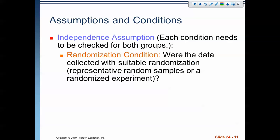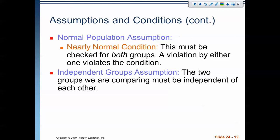The randomization condition: were the data collected with a suitable randomization? We need to check that for every test. The nearly normal condition — what we call our sample size condition for a means test — we have to check that for both groups. Both groups of data need to be nearly normal; a violation by either one violates the condition. Small samples need to be fairly normal; large sample sizes are okay to be not perfect — the larger the sample size, the more okay it is.